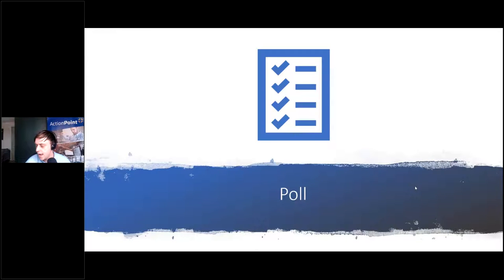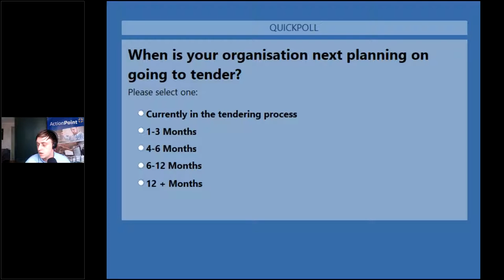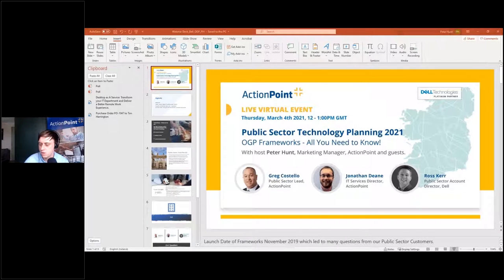I'm going to launch a poll to get a feel for where you are in your tender journey. The question is: when is your organization next planning on going to tender? Options are: currently in tendering process, one to three months, four to six months, six to twelve months, and twelve-plus months. Please give us your feedback — it'll make for some interesting Q&A content a little later.